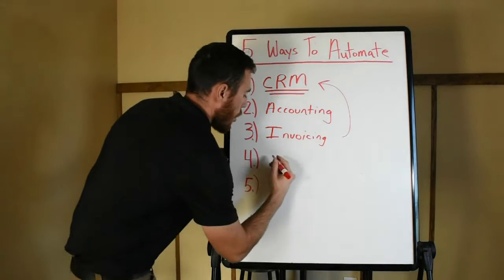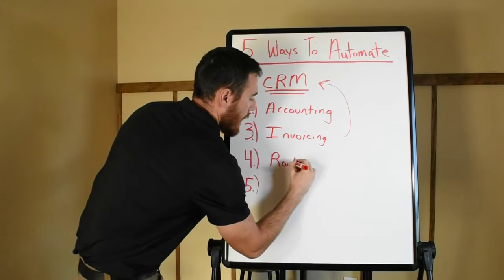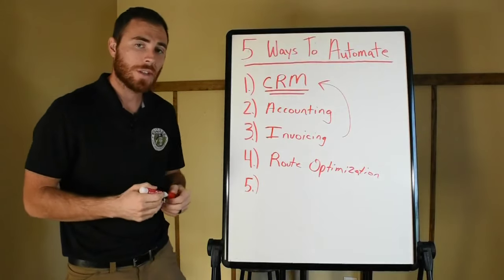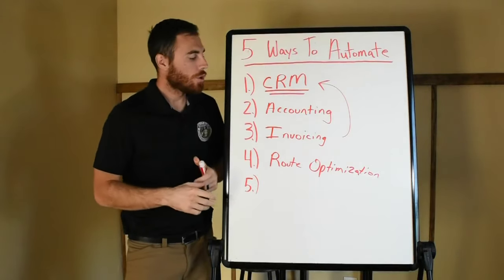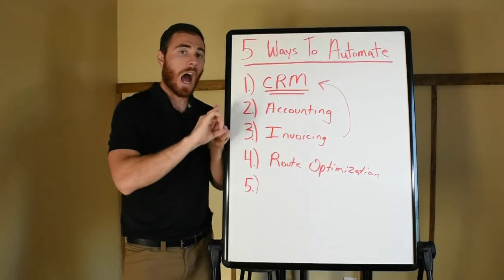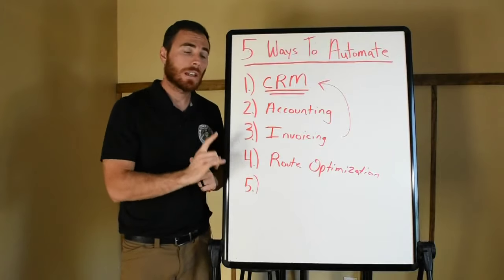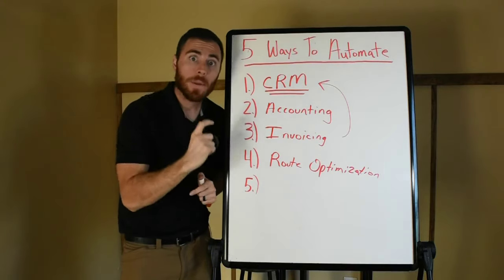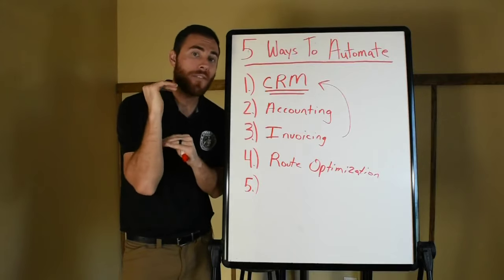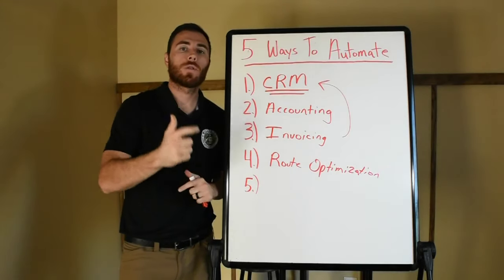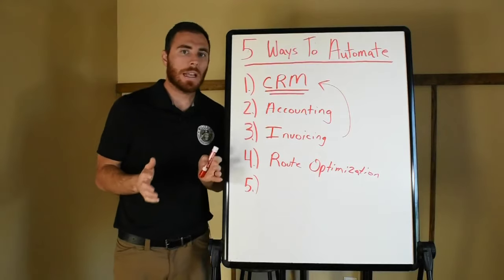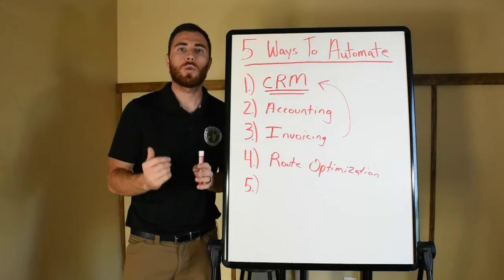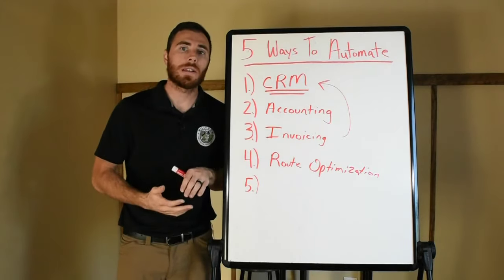Number four is going to be route optimization, and again this links back to your CRM. A good CRM will let you put all your customers on a map, checkbox them all, click 'optimize route,' and it will list them in order for the fastest, most efficient way to complete the route. In the beginning, if you only have five or ten customers it's not a huge deal — you can probably just throw them into Google Maps.